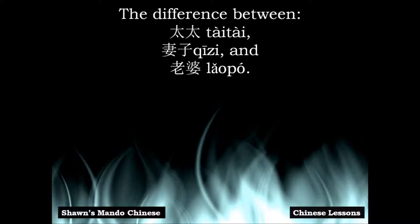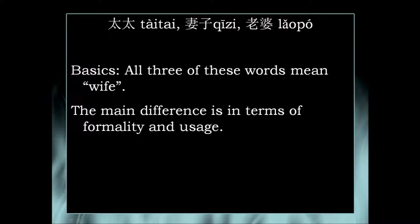Hi everyone. This video lesson explains the difference between the following three words in Mandarin Chinese: 太太, 妻子, and 老婆, which are all generally translated as 'wife.' All three of these mean wife — 太太, 妻子, 老婆. The main difference between the three is in terms of their formality and their usage based on such formality.